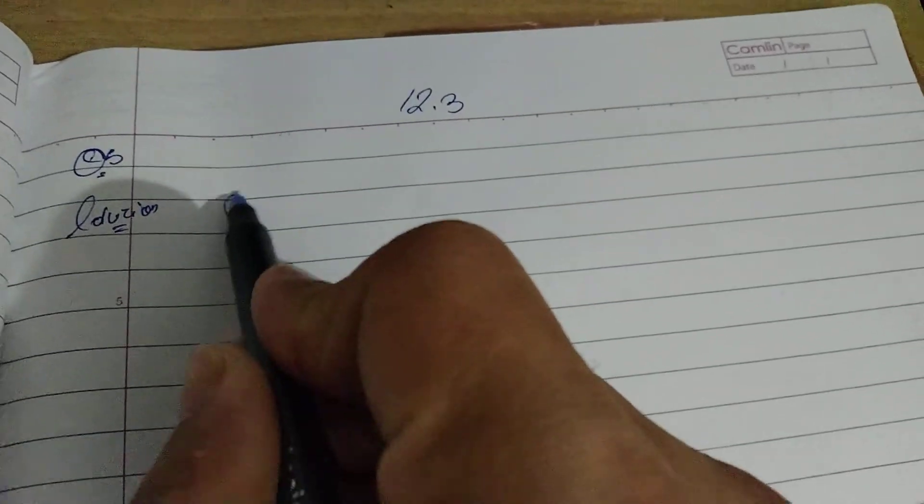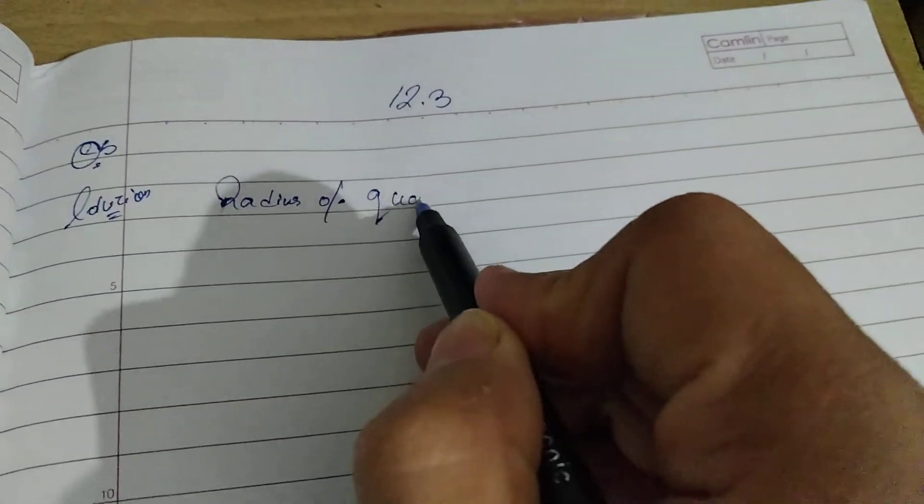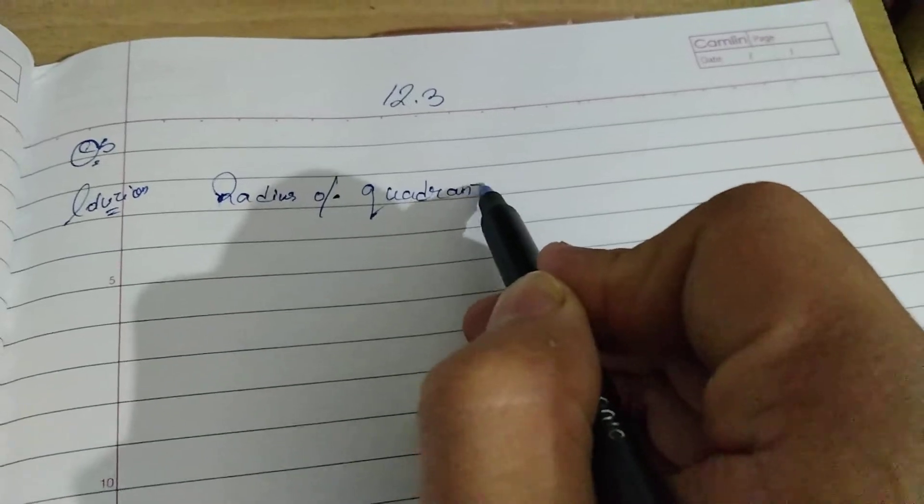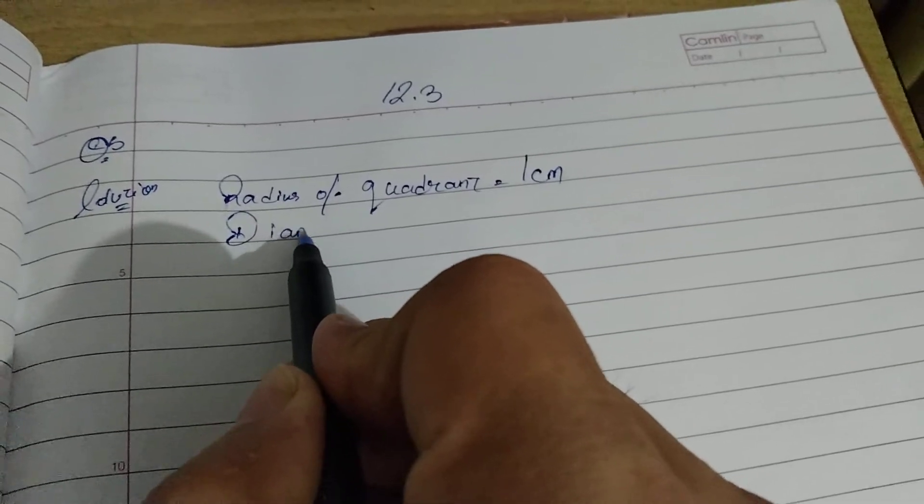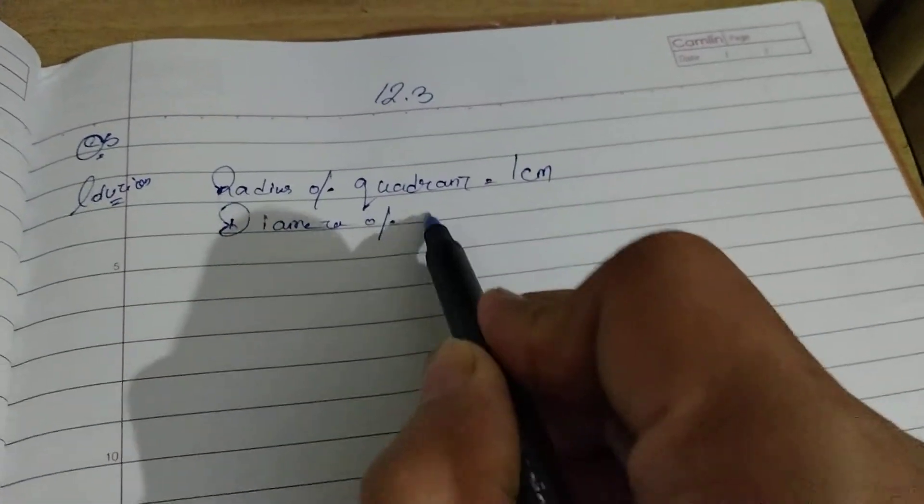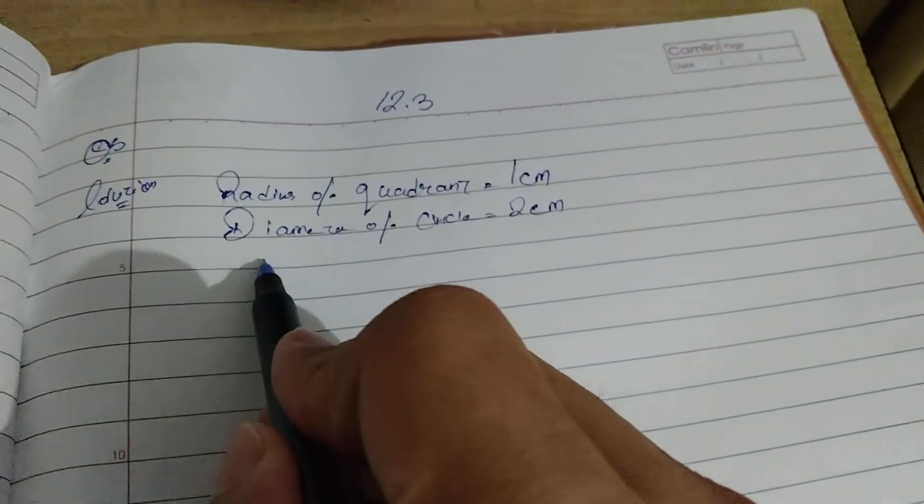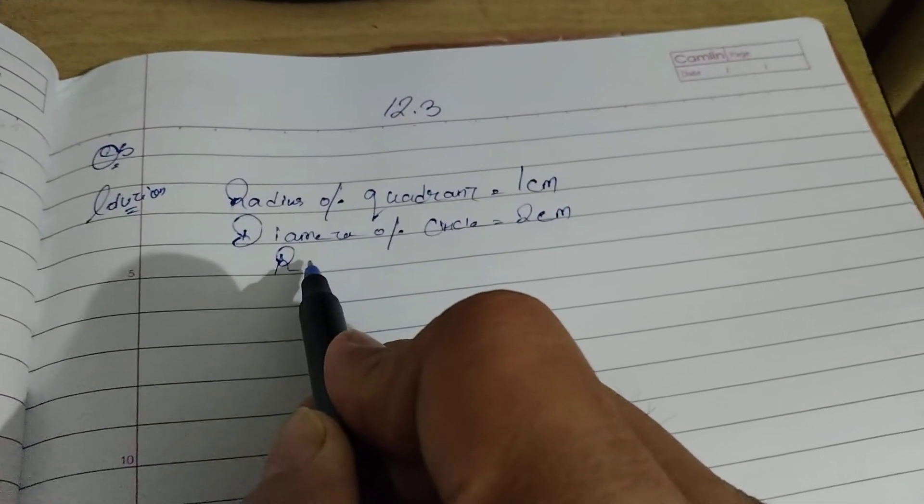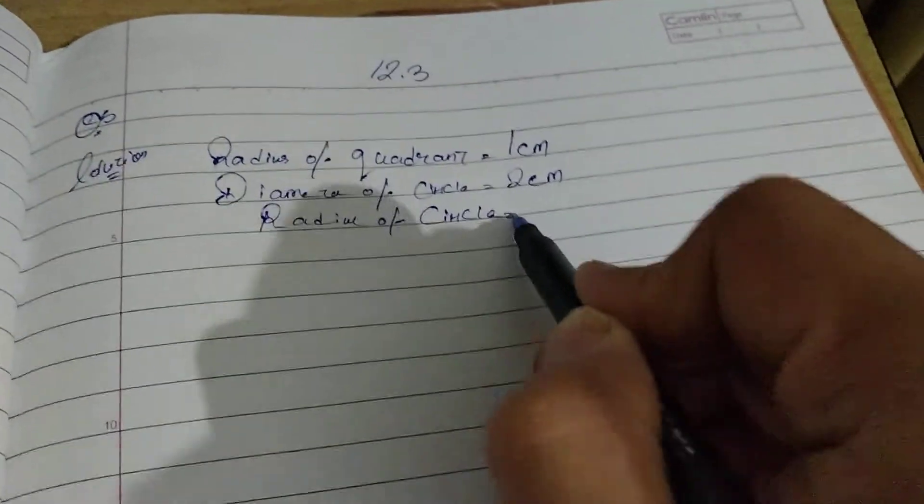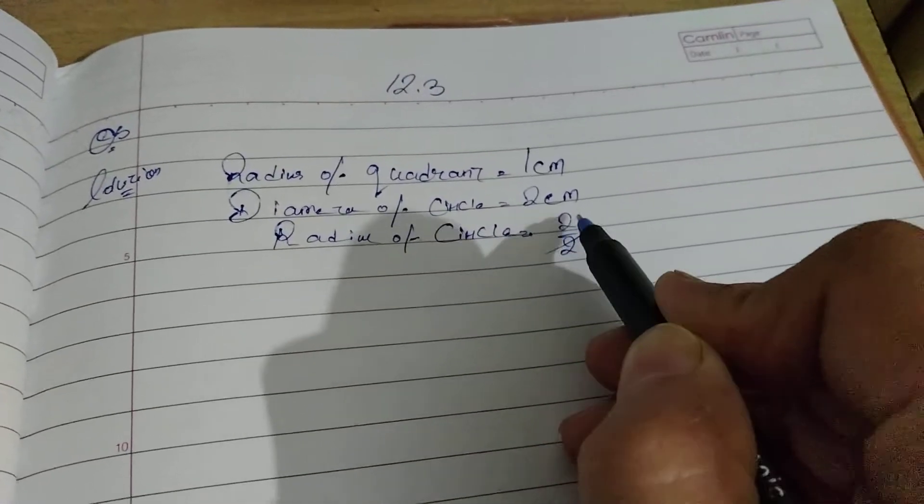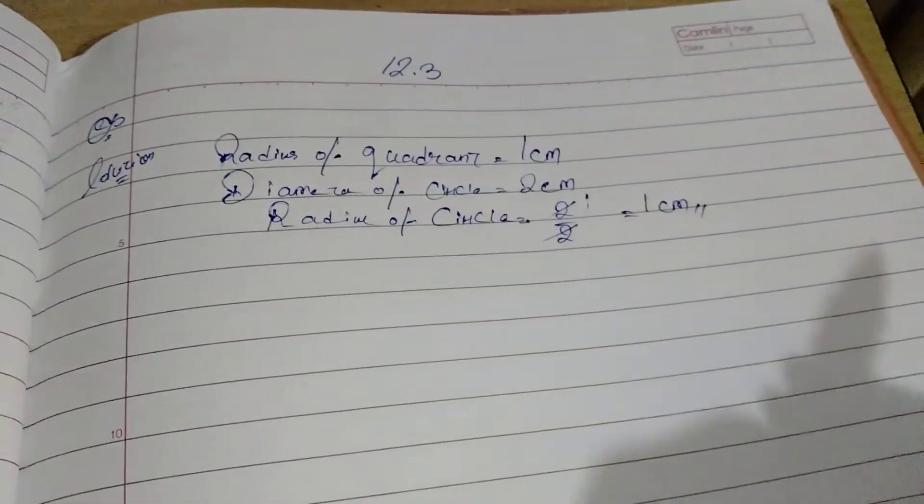I'm going to write radius of quadrant, that is given 1 cm. Next, diameter of circle is 2 cm. Now, if diameter of circle is 2 cm, then radius of circle is equal to 2 by 2, which equals 1 cm.